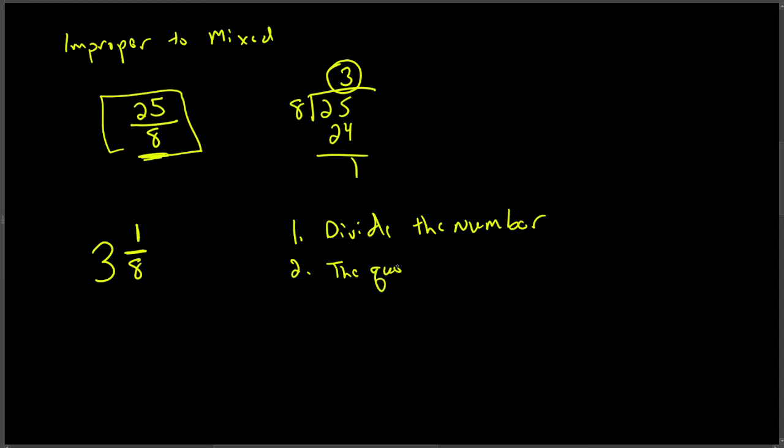The quotient is the whole number. The remainder over the divisor makes the fractional part.